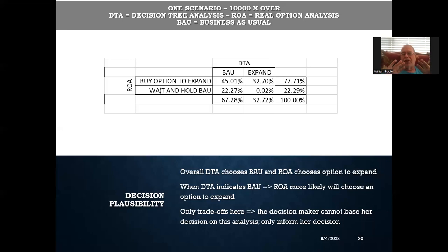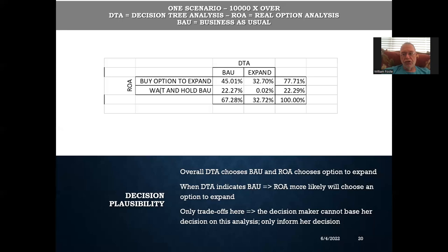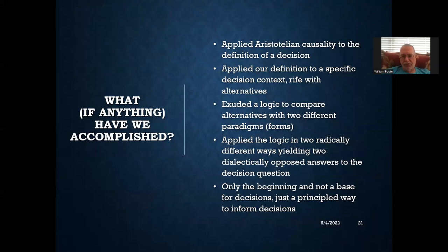We're only looking at trade-offs here — I have to say that right out loud. This is all about trade-offs. The decision-maker cannot base her decision on this analysis — only inform her decision. That's all this analysis can do. Base it, inform it, give shape to it. Base it means to justify it. This is part of the justification process — it isn't the justification. So what have we accomplished in this first round? We've applied Aristotelian causality to the definition of a decision. We've looked at four fundamental questions: what is it, what are its contents, how do we get here, where is it going?